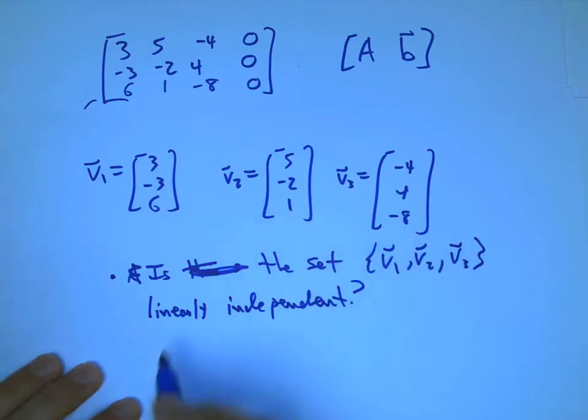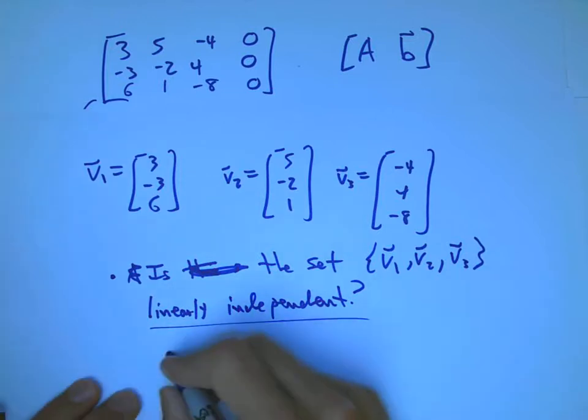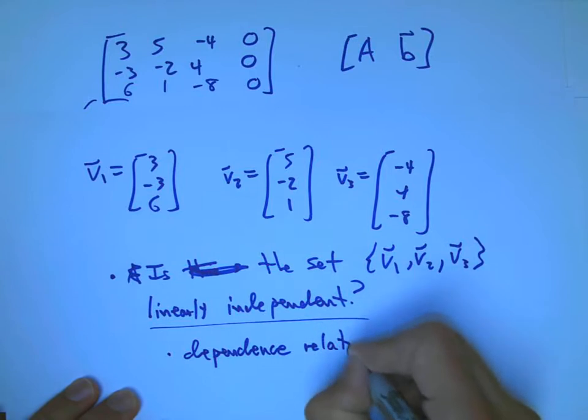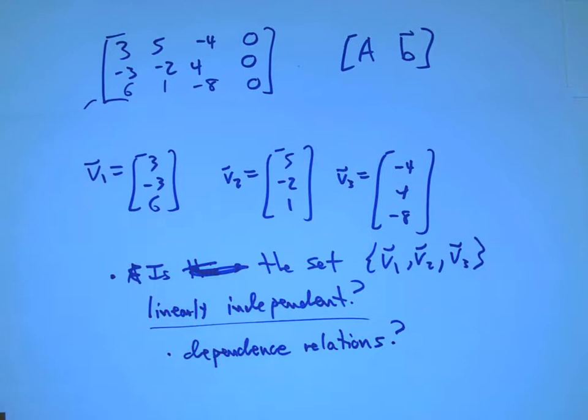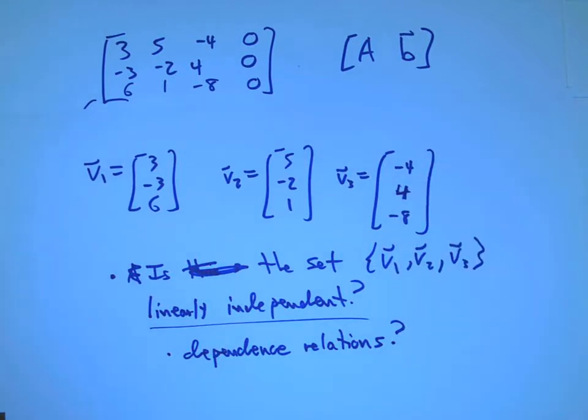If you know the answer, don't shout it out, please. And if it's not, what are the dependence relations? In exactly what way can we play them off against each other to make 0? Or another way, you can easily rejigger that, as we say, to figure out, can I make 1 out of a combination of the others?